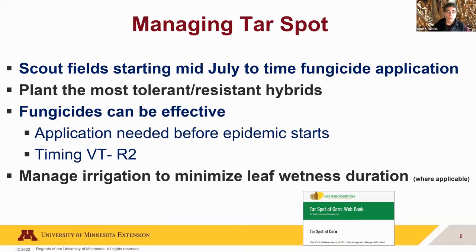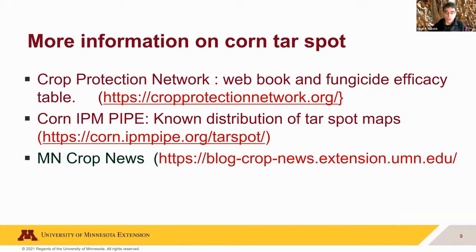To manage tar spot: scout for it and find out where it is. Planting the most tolerant and resistant hybrids is key — more companies are now providing hybrid ratings for tolerance and resistance. Fungicides can be very effective. If irrigating, do everything possible to minimize the duration of leaf wetness. Nathan, you can take over and add your comments and slides.